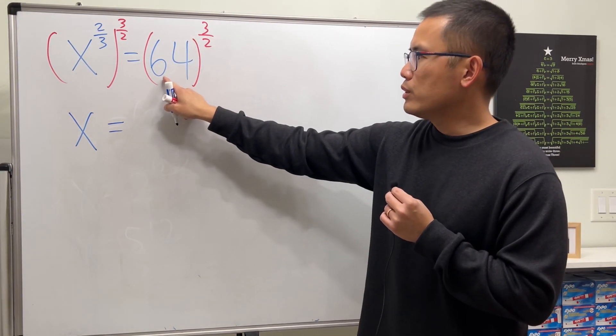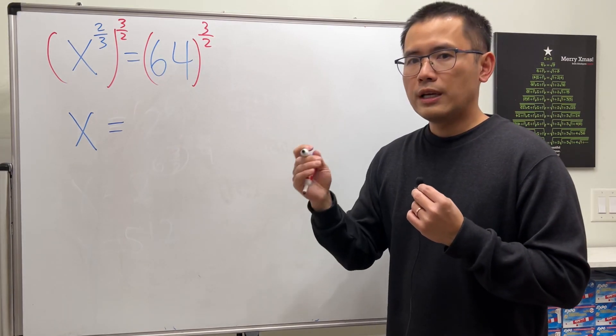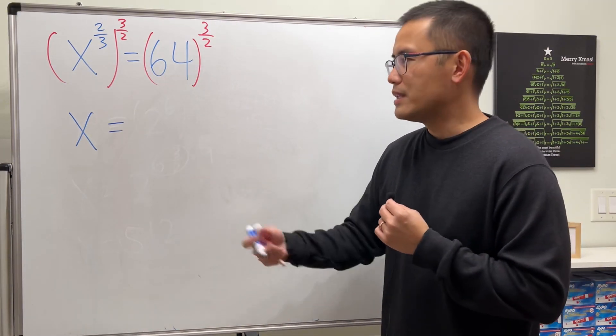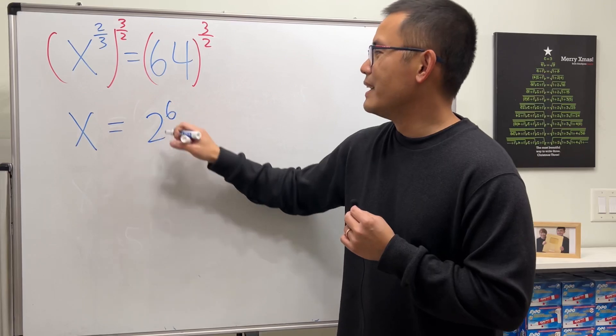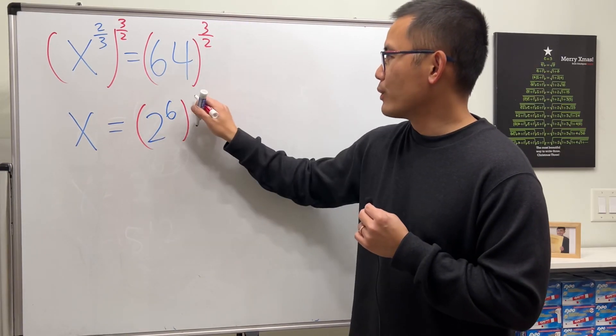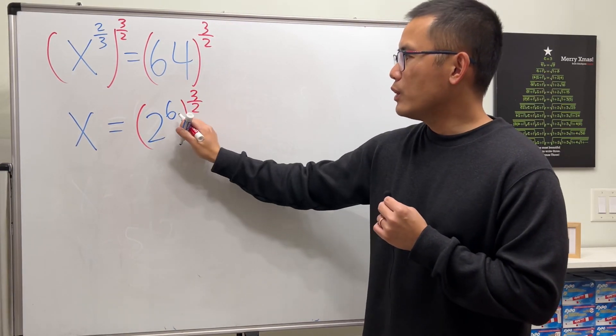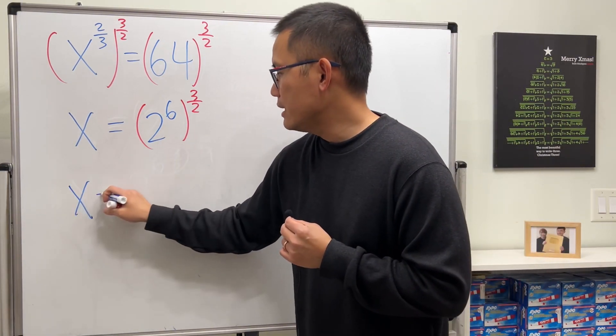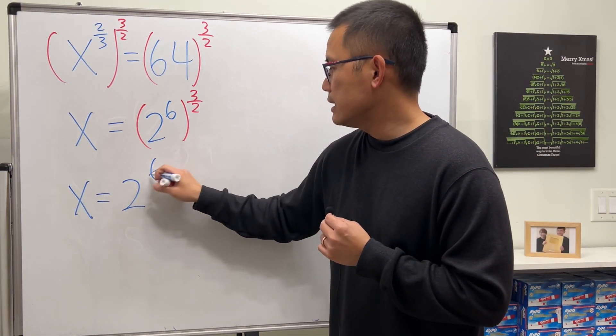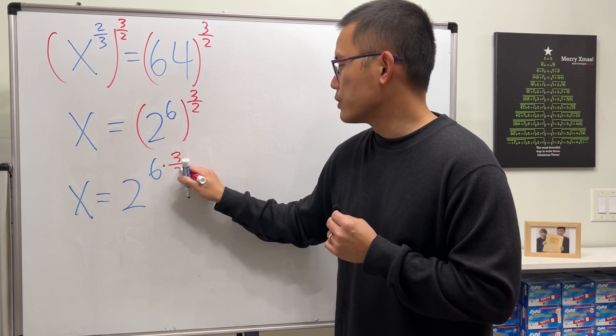And to do so, you can look at 64 as 2 times 2, you know, many times, 2 to the 6 power, and then raise to that power. And here we can multiply the powers, so we can get x equals 2 to the 6 times 3 over 2.